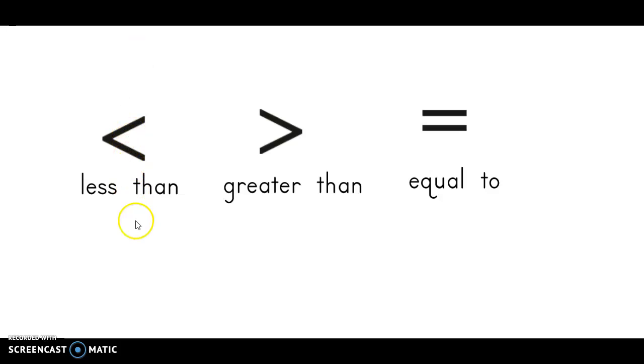So on the screen you see some symbols that we have learned about this year. This first one here is called the less than symbol and this is the greater than symbol and then of course this is the equal sign or the equal to symbol. We learned in class that we can use these symbols and a symbol is something that stands for something else. So instead of writing out the word less than we can write this symbol.